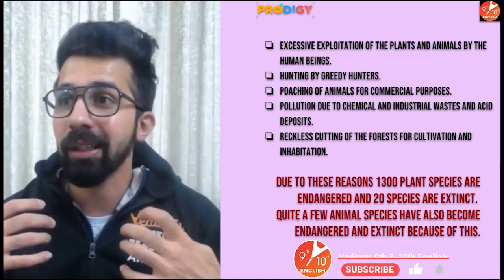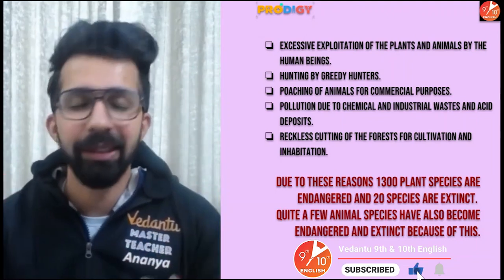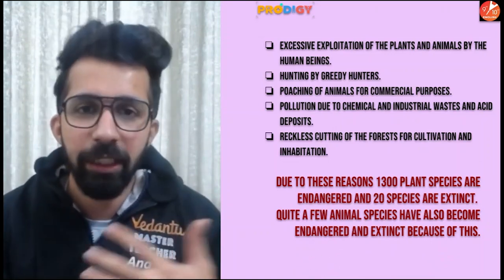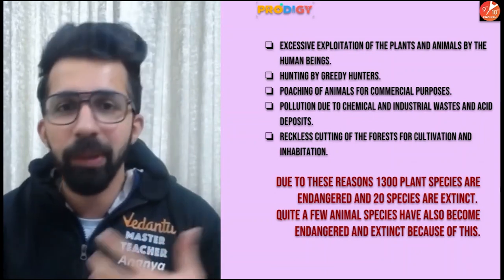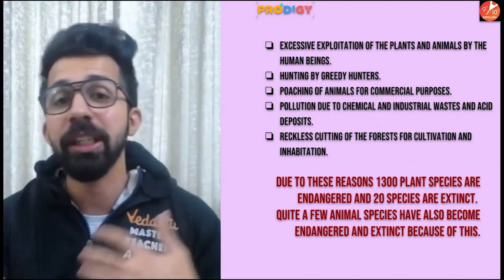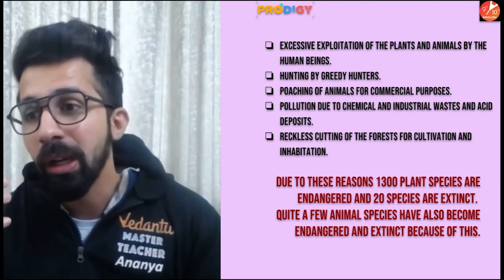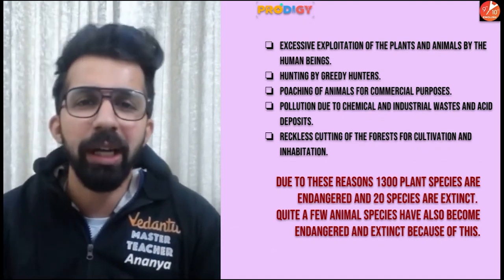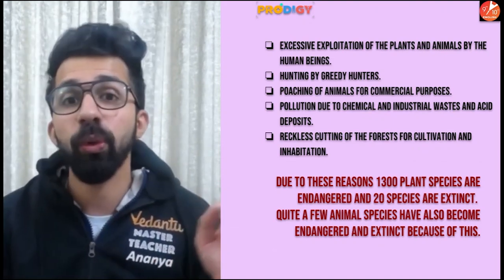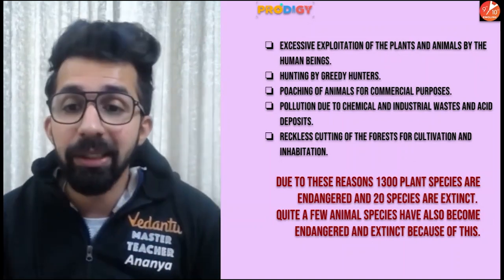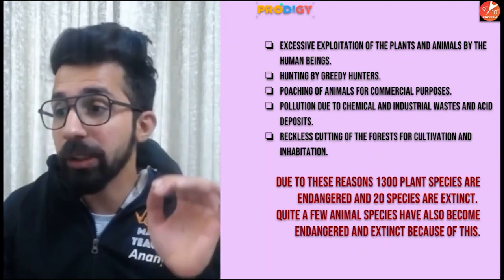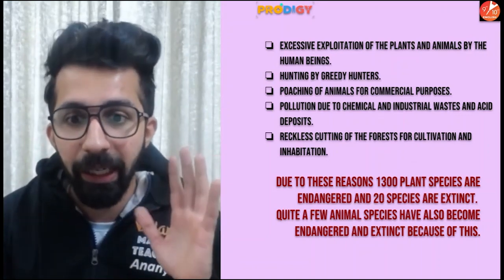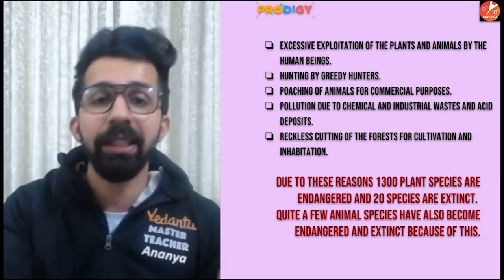Other reasons include pollution caused by chemicals, industrial waste, and acid deposits — effluents and gases released from industries contribute to environmental degradation. Then there's reckless cutting down of forests; as the population increases, more land is needed for agriculture, commercial purposes, and residential use. Due to all these reasons, 1,300 plant species are endangered — on the verge of extinction — and 20 species are already extinct. Quite a few animal species have also become endangered or extinct.